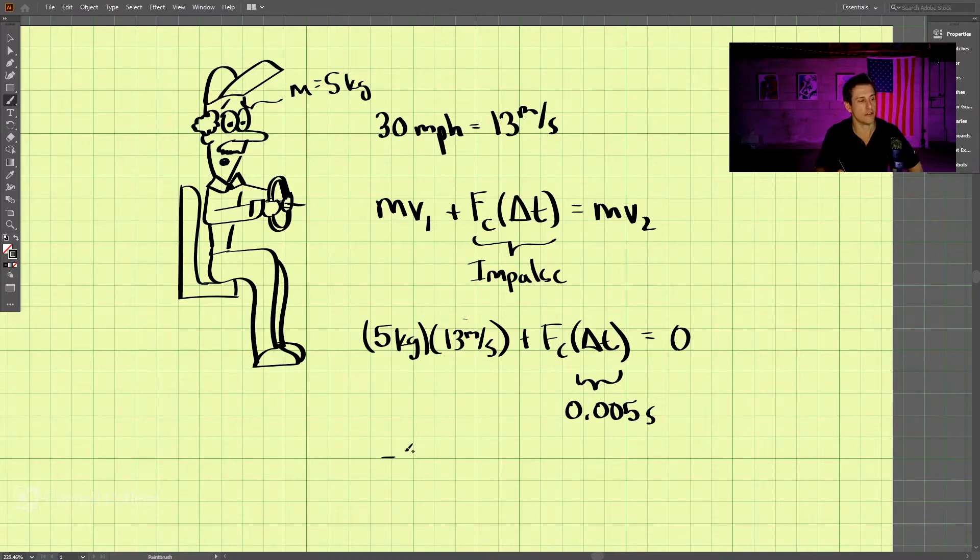Well, what we get here when we solve this equation is fc comes out to be 13,000 newtons. Negative 13,000 newtons. That means it's in the opposite direction of the head movement. So if we consider the head being moved to the right here, the force applied by the steering wheel is back the other direction. So 13,000. That's a lot of force. So to put that, to convert that, that's almost 3,000 pounds.